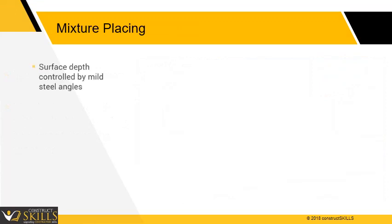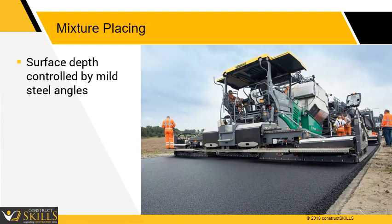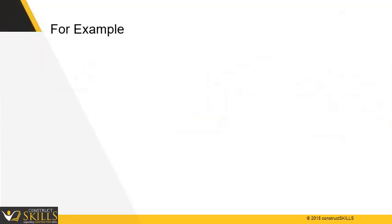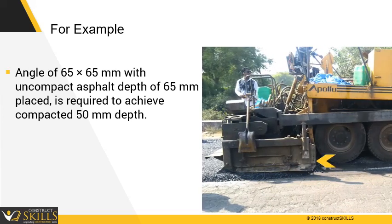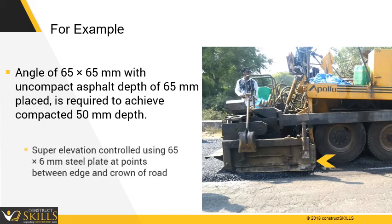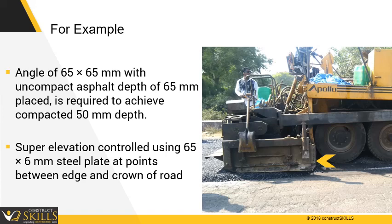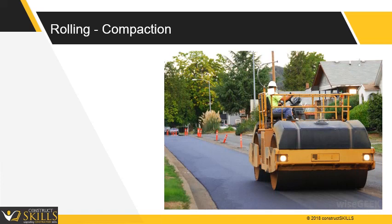Mixture Placing. The depth of the finished surfacing can be controlled using mild steel angles as side shutters. For example, an angle of 65 x 65 mm with an uncompacted asphalt depth of 65 mm being placed is required to achieve a compacted 50 mm surfacing depth. The super elevation should be controlled using 65 x 6 mm steel plate at intermediate points between the edge and the crown of the road. Compaction is important to achieve a dense carpet and should be done by rolling in three stages.